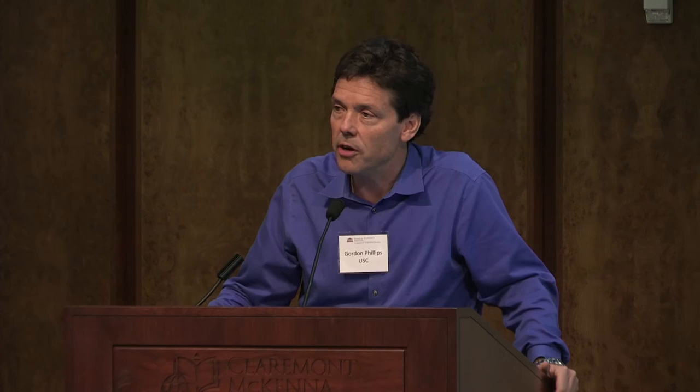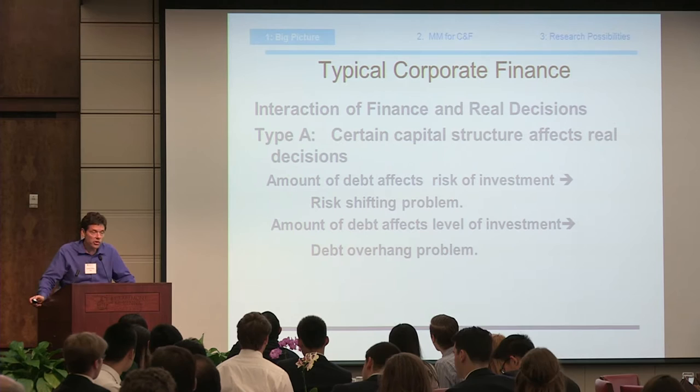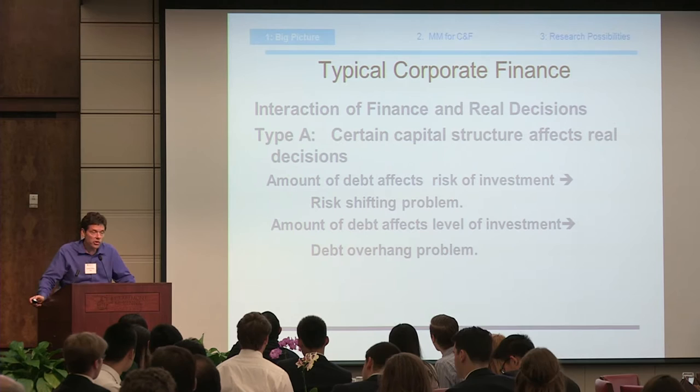Corporate governance, which deals with CEOs and corporate boards, is a big topic in finance. Why do powerful CEOs and poor boards survive if they destroy value? You see articles about how CEOs might be overcompensated. This is the idea of corporate governance — looking at why the market mechanism may break down, or at least break down for a short period of time. Now, the real question is that most of these topics ignore the industrial organization of markets.